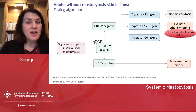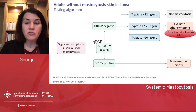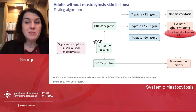For adults without mastocytosis skin lesions who have signs and symptoms suspicious for mastocytosis, we start with quantitative PCR in the peripheral blood. If positive for KIT-D816V, we go straight to a bone marrow biopsy. If negative, we check serum tryptase. Normal tryptase levels suggest no mastocytosis; levels elevated above 20 likely indicate disease. Those in between may have hereditary alpha-tryptasemia (HAT) — increased copy numbers of the gene including alpha-tryptase — as published by John Lyons and colleagues. These patients can or cannot have systemic mastocytosis.